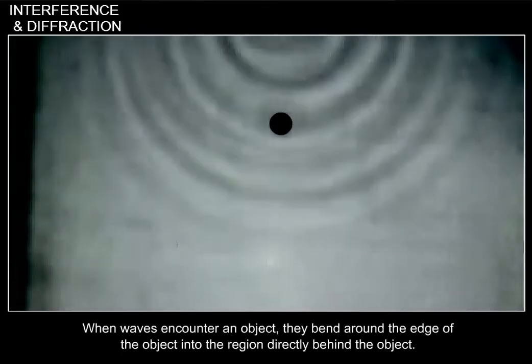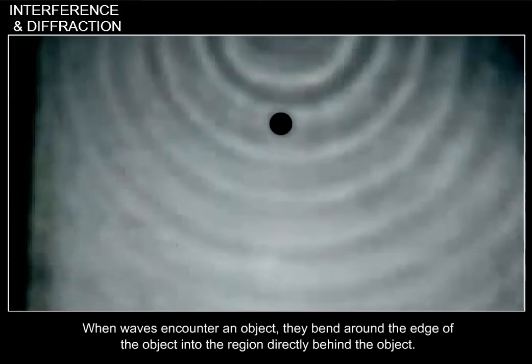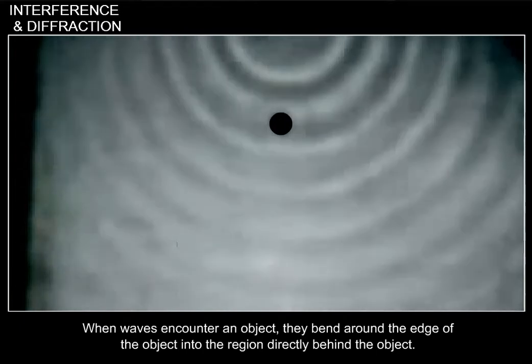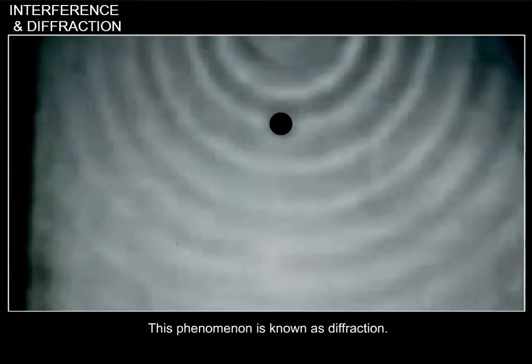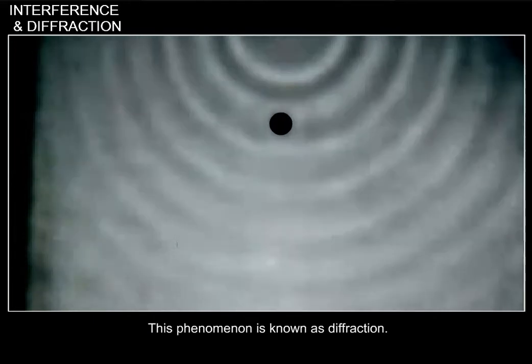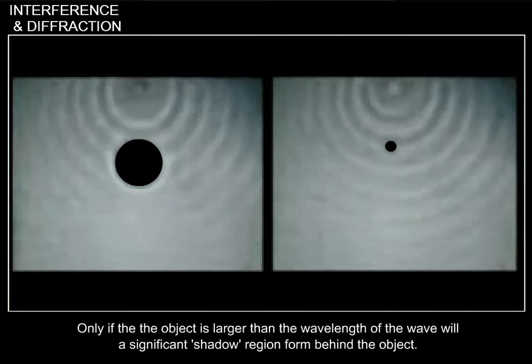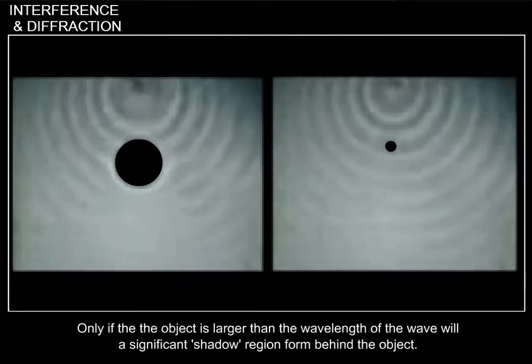When waves encounter an object, they bend around the edge of the object into the region directly behind the object. This phenomenon is known as diffraction. Only if the object is larger than the wavelength of the wave will a significant shadow region form behind the object.